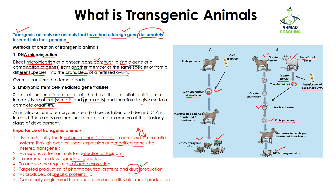For example, human growth hormone, which is required for the growth of humans, can be produced in bulk by the help of transgenic animals. Genetically engineered hormones can also be used to increase milk yield as well as meat production. So you can produce hormones through transgenic animals — this is why so much focus is placed on transgenic animals.